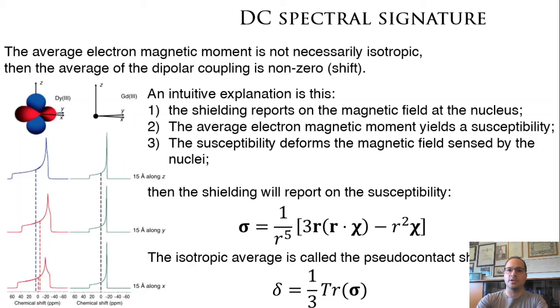Then the average of the dipolar coupling will be non-zero, and this causes a shift that is called the pseudo-contact shift. An intuitive explanation is that since the shielding tensor reports on the magnetic field that the nucleus is sensing, and the average magnetic moment yields a susceptibility, if the susceptibility deforms the magnetic field that is sensed by the nuclei, then the shielding will be a reporter of the susceptibility. The isotropic average of this is called the pseudo-contact shift.